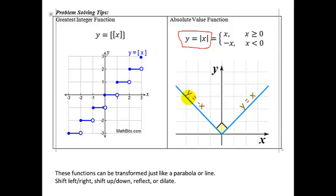It's also called a V function because it looks like a V. Both of these functions, just like lines and parabolas, can all be transformed. We learned how to shift left and right, up and down, how to reflect, and how to dilate. You can take this exact shape and slide it left, right, up, or down, and it will maintain its shape while changing its location. Or you can reflect it, dilate it, or any combination.